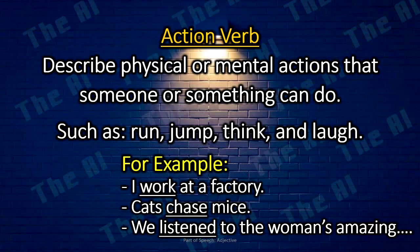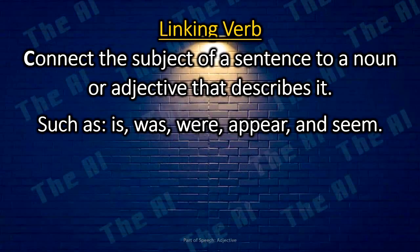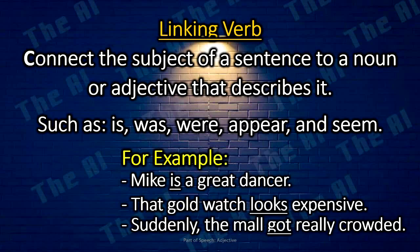Action verb examples: I work at a factory. Cats chase mice. We listen to the woman's amazing story. Linking verbs connect the subject of a sentence to a noun or adjective that describes it, such as is, was, were, appear, and seem. For example: Mike is a great dancer. That gold watch looks expensive. Suddenly, the mall got really crowded.